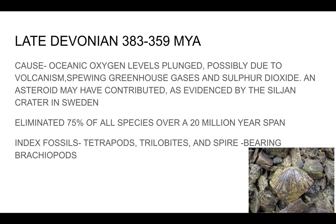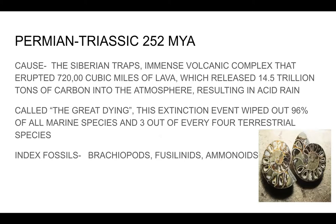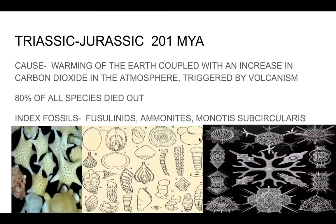Then we have the granddaddy of them all: the Permian-Triassic extinction event, caused by volcanic eruptions in Siberia — called 'the great dying.' About 96% of all marine species disappeared, along with three out of four terrestrial species. Index fossils for this period include brachiopods, fusulinids, and ammonoids.